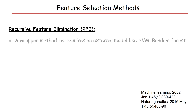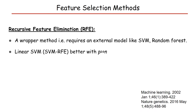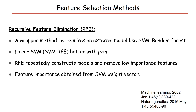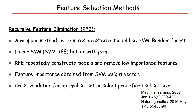The first method we use is recursive feature elimination, or RFE. It is a wrapper method that requires an external model such as support vector machine or random forest. We use linear SVM because it generally performs better with the P greater than N problem compared to non-linear kernel SVM. RFE repeatedly constructs models and removes low-importance features. Feature importance in linear SVM can be obtained from the SVM weight vector, and we can perform cross-validation for optimal subset selection or pre-define the subset size. This method can be computationally expensive because it has to train multiple models.